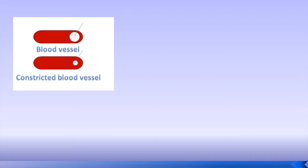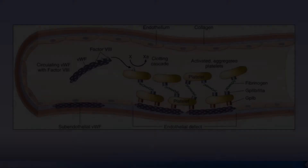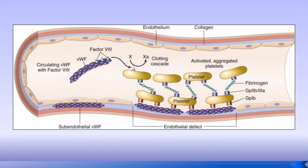Well my friend, when you scratched yourself, your blood vessels constricted, which activated clotting factors. These blood clotting proteins went through a coagulation cascade, which helped to clot your blood. Within this cascade is this really important protein called Factor VIII, which plays a major role in blood clotting. Let's take a closer look at it.